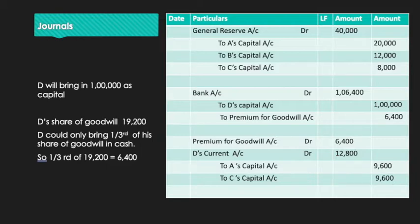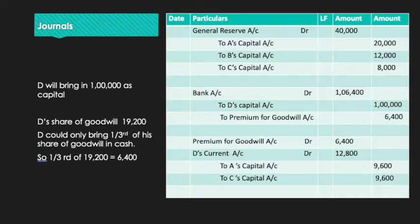After calculating the sacrificing ratio as 1:1 and D's share of goodwill, let us start with the journal entries, as the question asks us to prepare journal entries, capital accounts and the opening balance sheet. Before that, we should do the internal journal entries first. We can see in the balance sheet there is a general reserve of 40,000, so this is the first journal entry we start with.